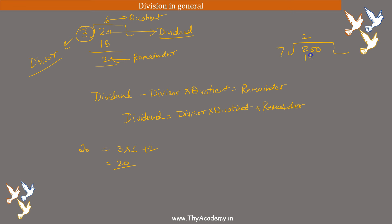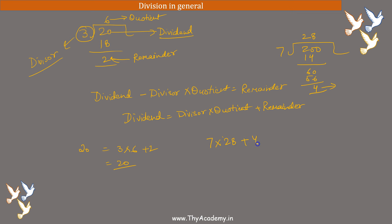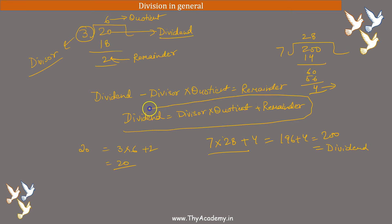First 14 comes here — 7×2=14, so 6 below, then 60. Then 7×8=56, so remainder 4. So divisor into quotient: 7×28=196, plus remainder 4 equals 200, which is equal to the dividend. Right?